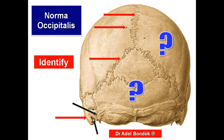This notch is the mastoid notch, where the posterior belly of the digastric muscle is attached. The meeting of the sagittal and lambdoid sutures is the lambda.